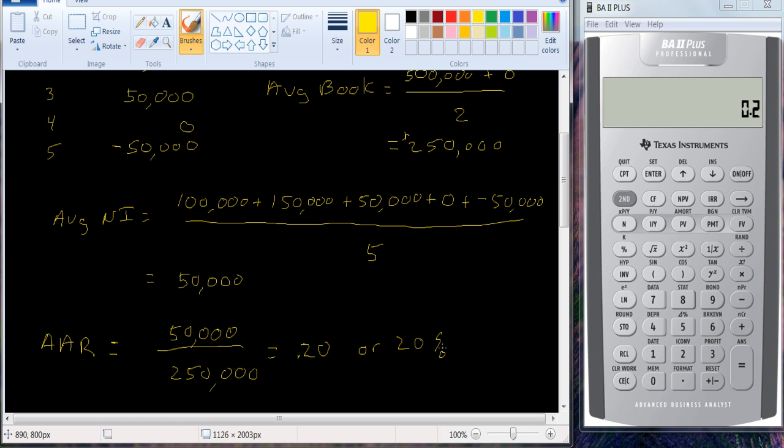But the problem with using this is that it's not really a rate of return, number one. We've not accounted for the time value of money. Does it account for all cash flows? Well, net income doesn't really account for all cash flows. It only accounts for revenues, things that we see.